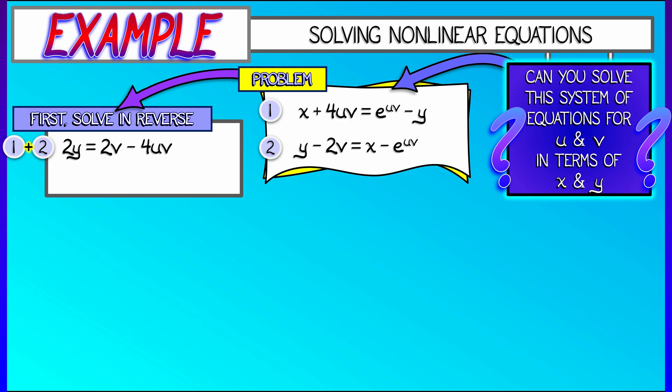And likewise, if I subtract the second equation from the first equation, manipulate that a little bit, I get 2x equals 2e to the uv minus 4uv minus 2v.